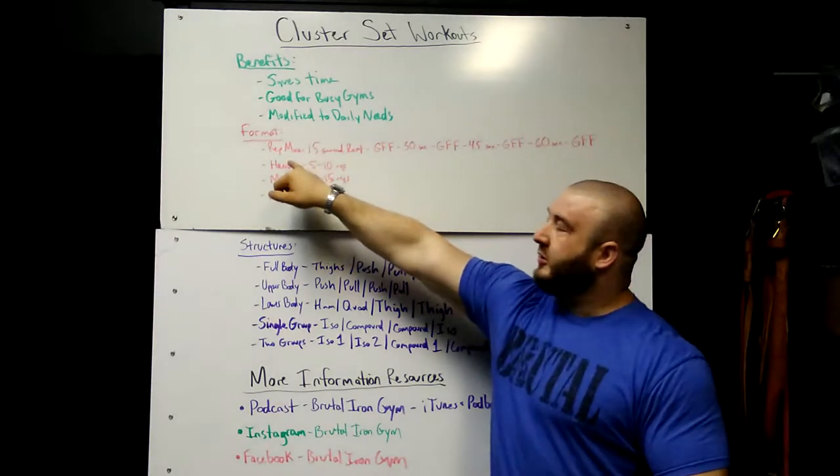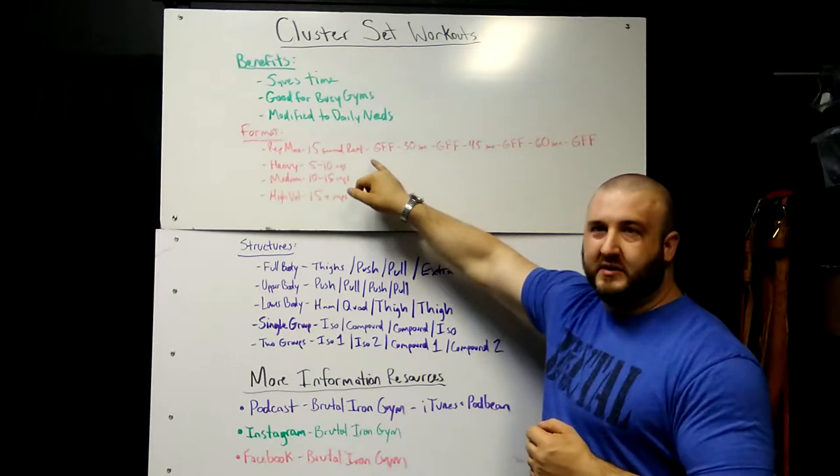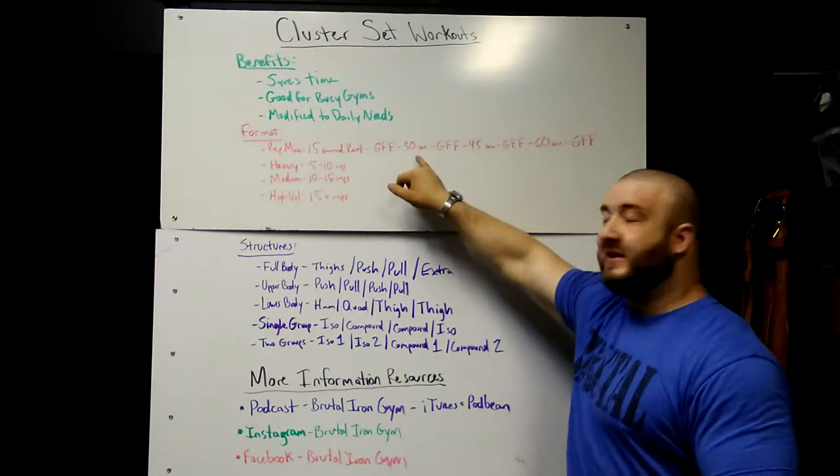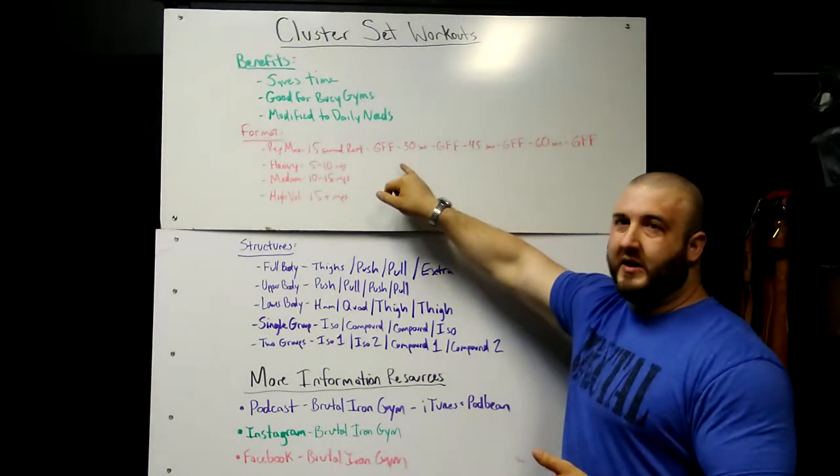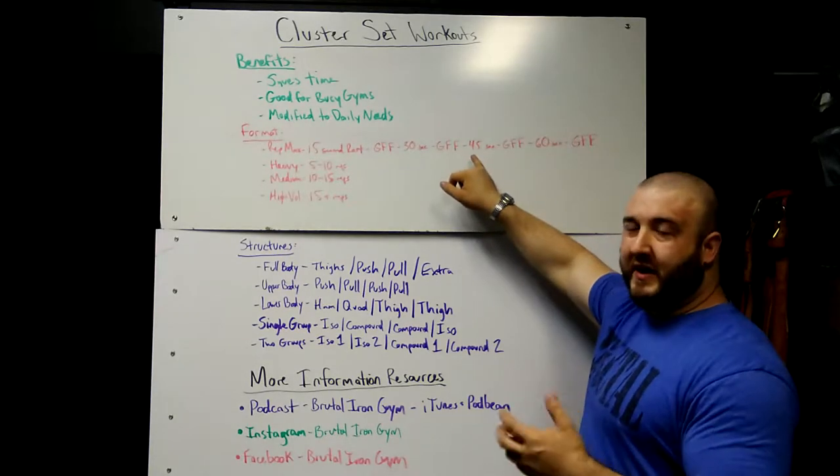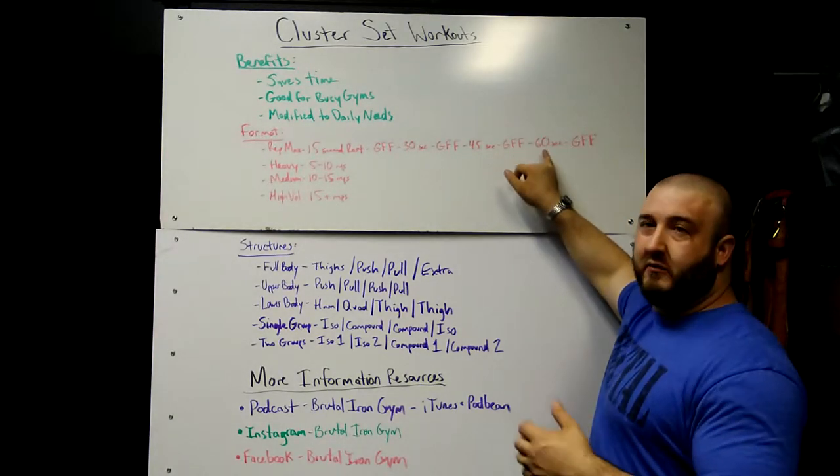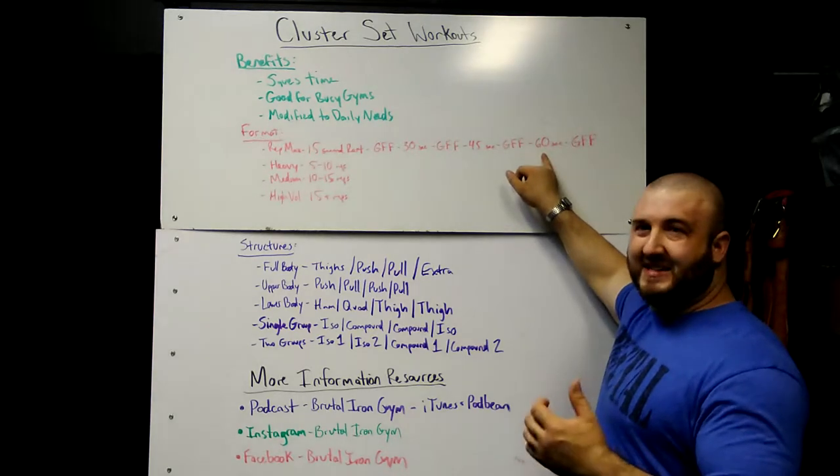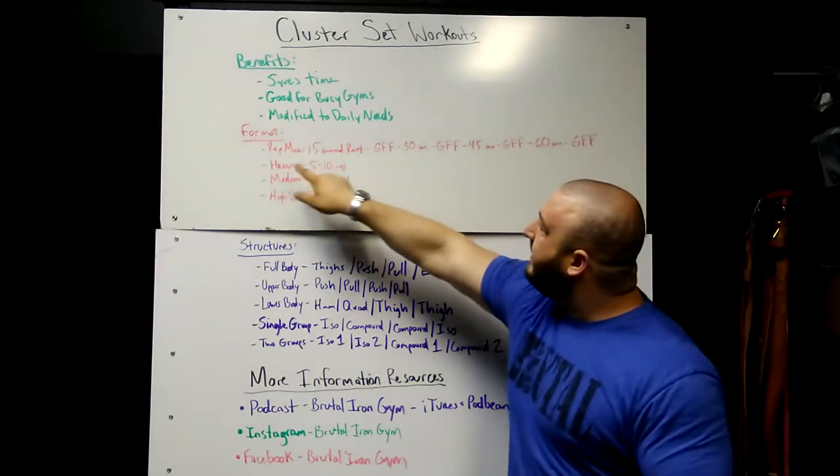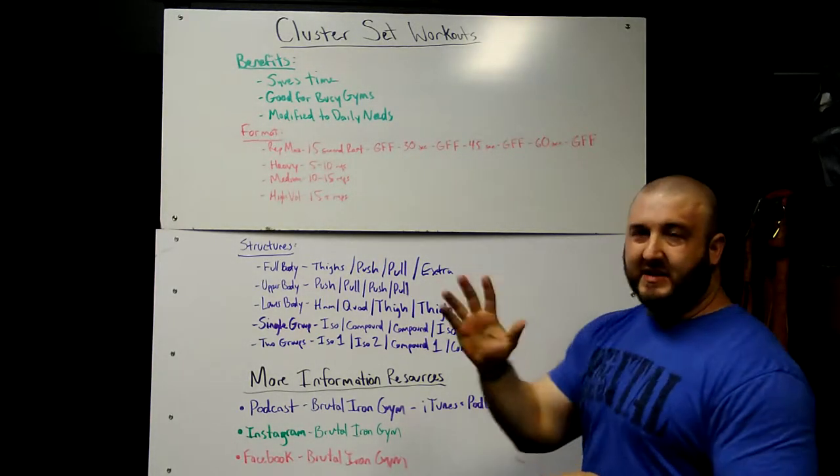So you do your rep max, 15 second rest, same weight for good form failure. Once you reach good form failure, you rest 30 seconds, then try the same weight again. Then rest 45 seconds, same weight again for good form failure. Then rest 60 seconds or one minute, and go again to good form failure.